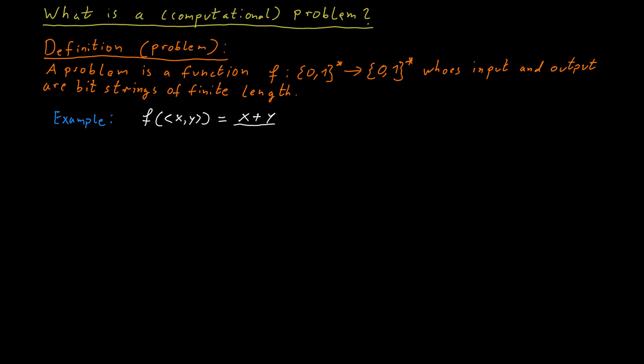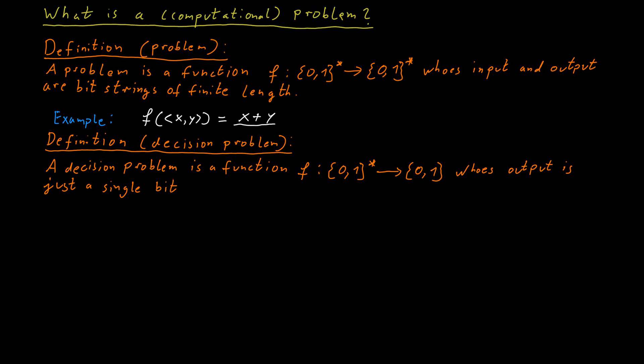Apart from these general problems where we allow arbitrary bit strings as outputs, we sometimes only really care about what's called a decision problem. A decision problem is a function where the output is just a single bit, it's just a single 0 or 1, a single yes or no.